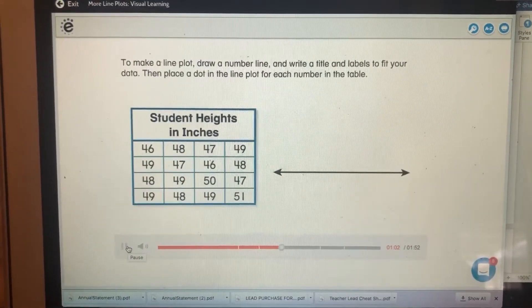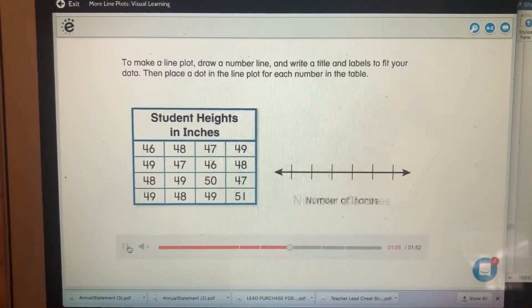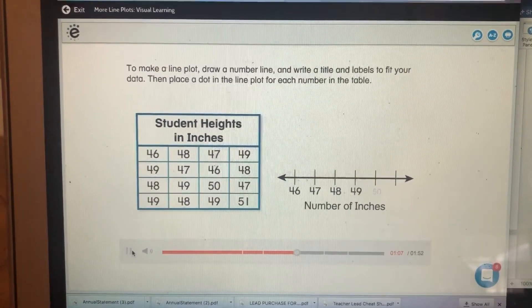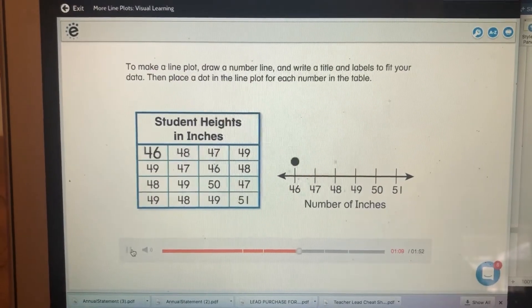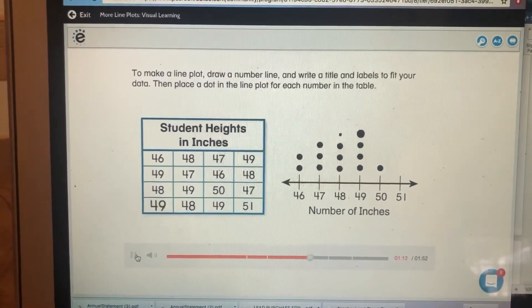To make a line plot, draw a number line and write a title and labels to fit your data. Then, place a dot in the line plot for each number in the table.